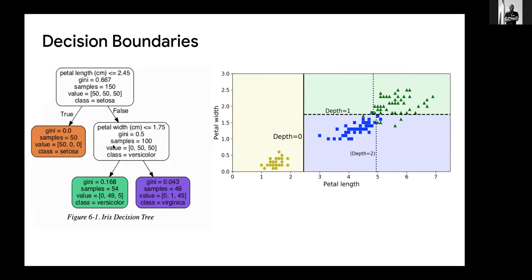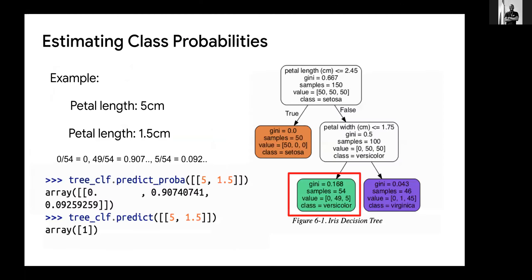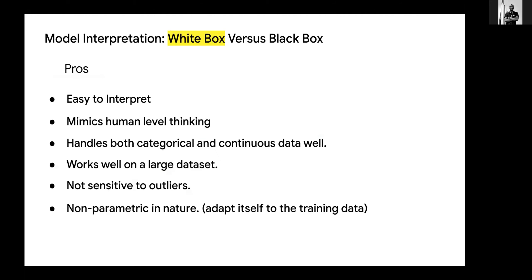It works well on large datasets because it deals with one feature at a time — not petal length and petal width simultaneously. Because of that, it's fast and can handle complex data. It is also not sensitive to outliers.